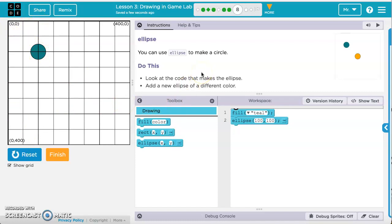And then it wants us to add a new ellipse of a different color. So to do that, we'll just go ahead and grab the fill command, drag it over here, and we can make it orange. You can just highlight what's in there and type orange, but some of the colors won't show up in the dropdown menu. And then we can go ahead and grab the ellipse command, bring it over here, and if we set it at 200, 200, it'll be right here in the center.